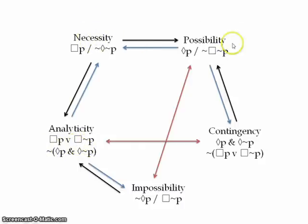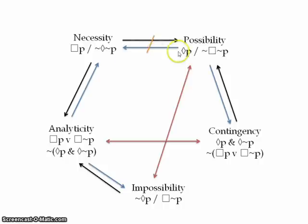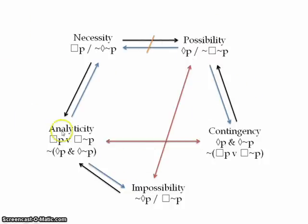But necessity doesn't imply possibility in the same way. As you can see, there's not that sort of logical connection between the two. So those relations there are not in virtue of the logical form. Possibility doesn't have to depend on necessity in the same way. And as I said, there are logics where things turn out to be both necessary and not possible. So you can sort of see here the relations — those things that are relations in virtue of the logical form — and of course then we've got these intuitive relations here.